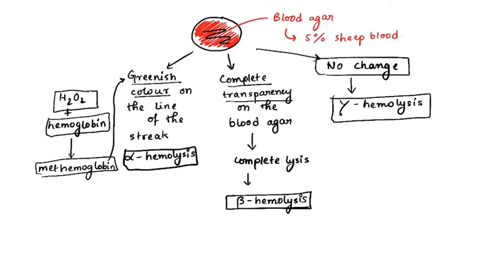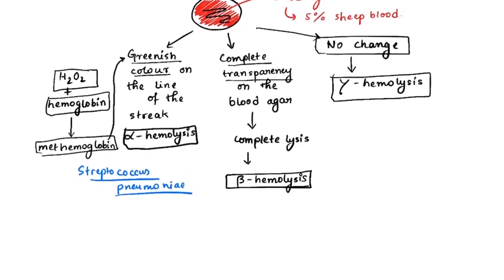For alpha hemolysis, the example is Streptococcus pneumoniae. For beta hemolysis, there are many examples — even Staphylococcus is weakly beta hemolytic, but not as hemolytic as Streptococcus species. One key beta hemolytic Streptococcus is Streptococcus pyogenes. Gamma hemolytic bacteria, which have no hemolytic effect, include Enterococcus faecalis.